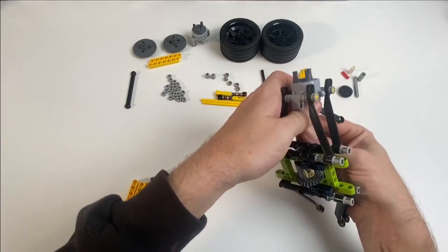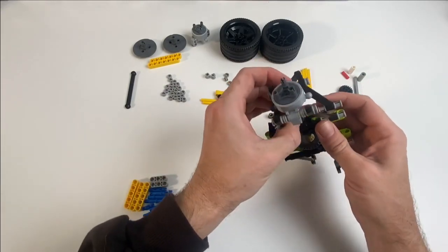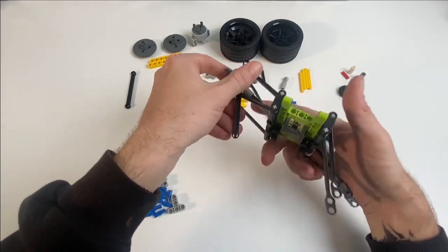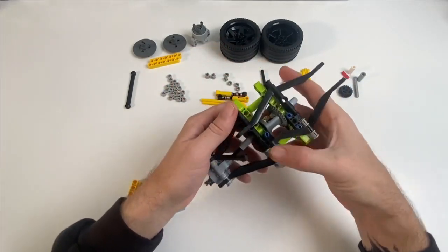This is quite fiddly, and you actually need to take off the constant velocity joint that connects to the differential in order to reconnect the whole thing together into one piece.